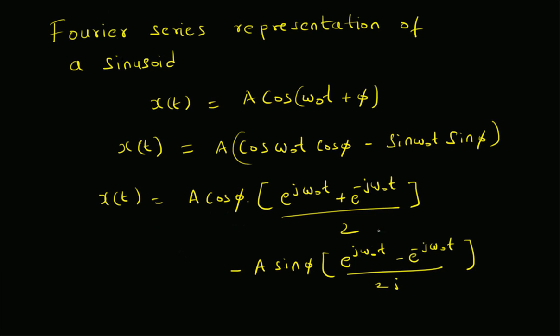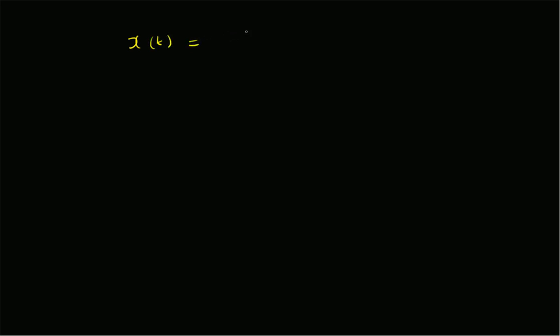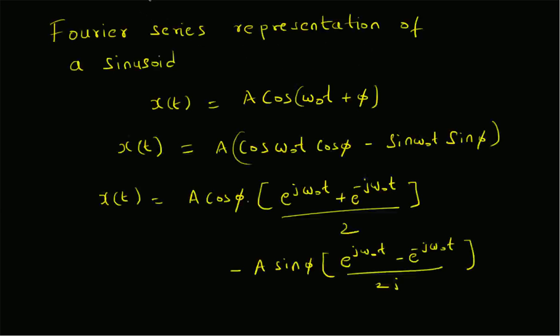Now let us compare this expansion with the definition of the Fourier series. For a signal x(t), we can write it as the summation over all values of k of aₖ·e^(jkω₀t). That is the Fourier series expansion. Now compare this with the expression for x(t) we derived.